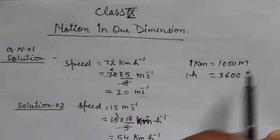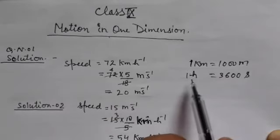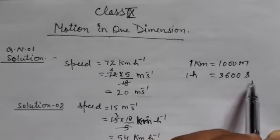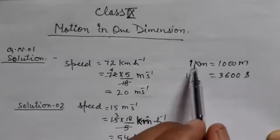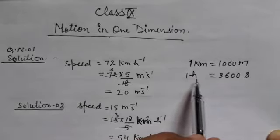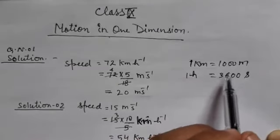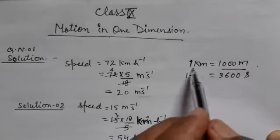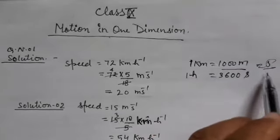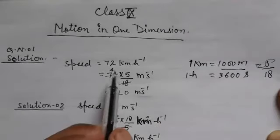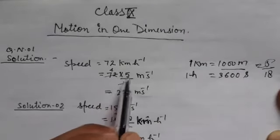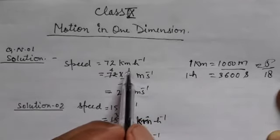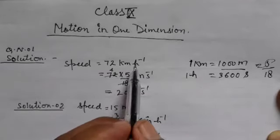1 km is equal to 1000 meters and 1 hour is equal to 3600 seconds. So, 1 km per hour is equal to 1000 by 3600, which gives 5 by 18. Now, 72 multiplied by 5 by 18, because km changes into meters and 1 hour changes into seconds.